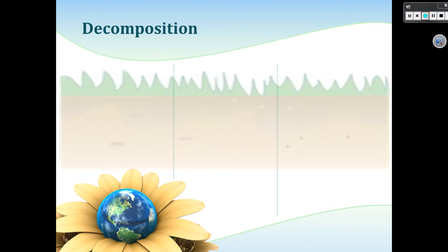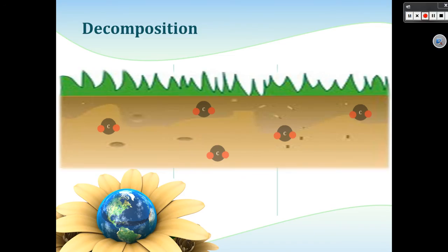When the animal or plant dies, it decomposes into the soil, where the carbon atom will find its new home.